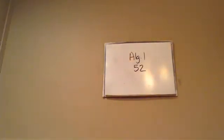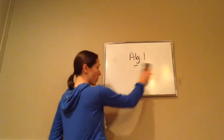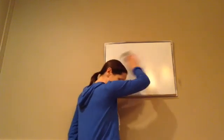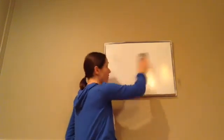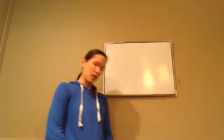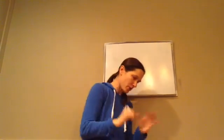Algebra 1, Lesson 52. This is on more addition of rational expressions with unequal denominators and then overall average — kind of two different lessons in one.